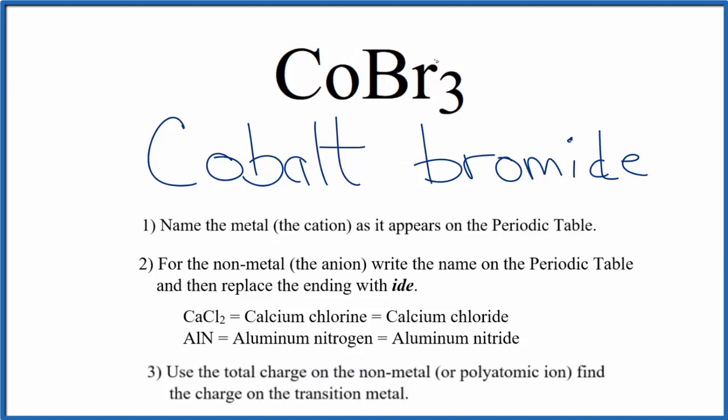We know that bromine, in group 17, sometimes called 7A, is 1 minus. We have 3 bromide ions, 3 times 1 minus, that's 3 minus. So the cobalt has to be 3 plus. So we're going to write Roman numeral III in parentheses between the names.